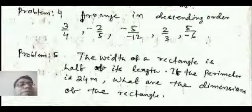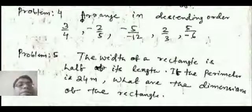Problem 5. The width of a rectangle is half of its length. If the perimeter is 24 meter, what is the dimension of the rectangle?